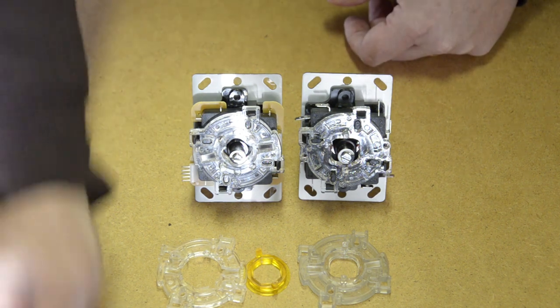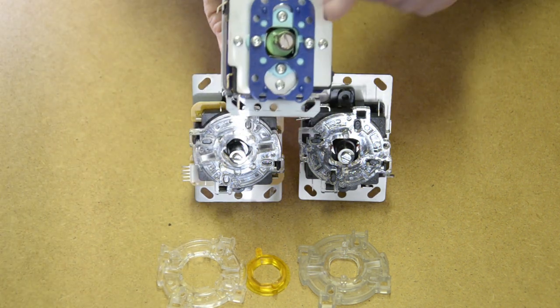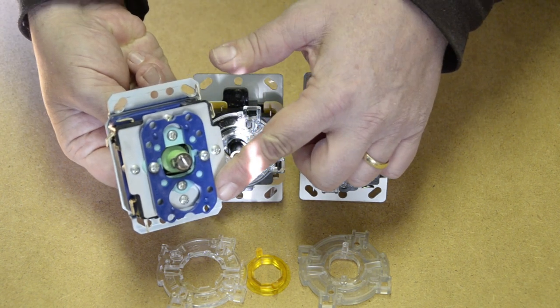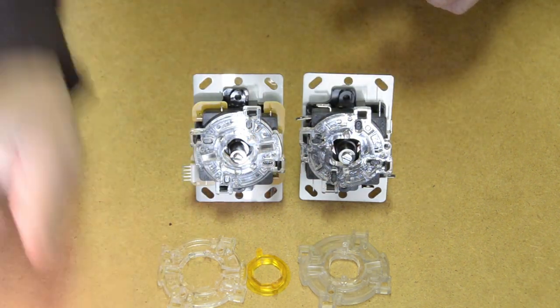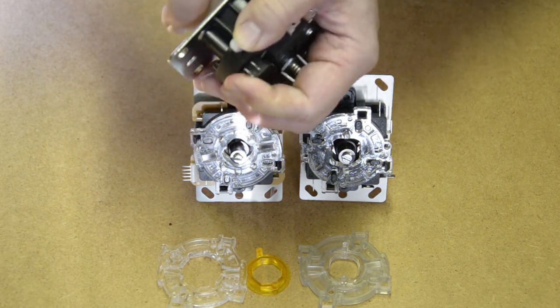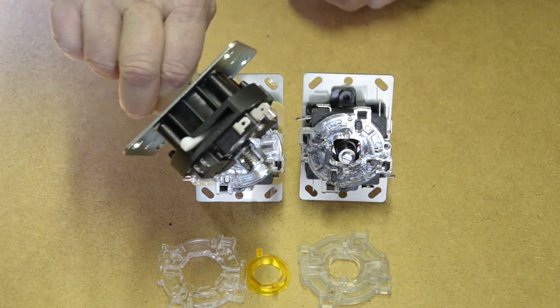Seimitsu has a different solution. They have different templates that you combine and screw on. And there's one stick that even has a switch that will allow you to select between two different orientations of a square gate. Now let's look at some sticks.